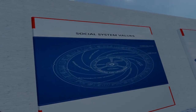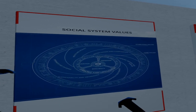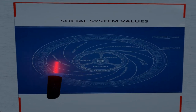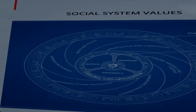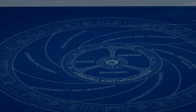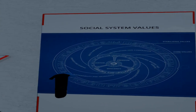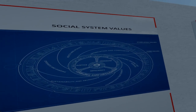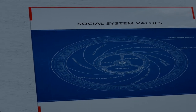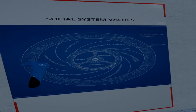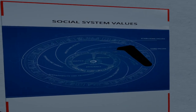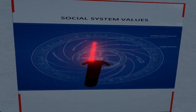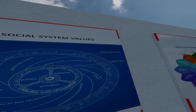Moving from needs to values, in this community-type social system we have a set of core values, as well as a set of encompassing stabilizing values. The core values are freedom, justice, and efficiency. And the stabilizing values are health and vitality, appreciation and compassion, autonomy and purpose, cooperation and sharing, learning and integration, sustainability and abundance, as well as openness and sharing. Essentially, this is a visual representation of the structure of the value system, with the three core values within a spiraling organization of seven stabilizing sets of values.